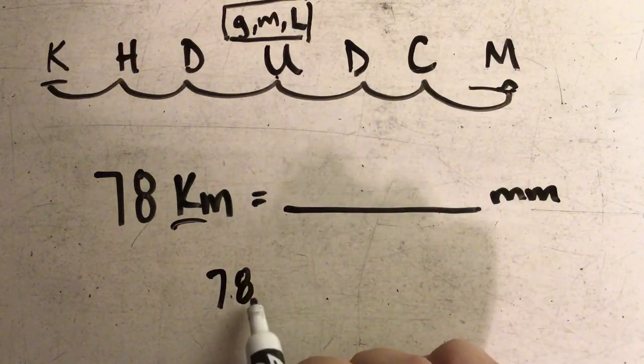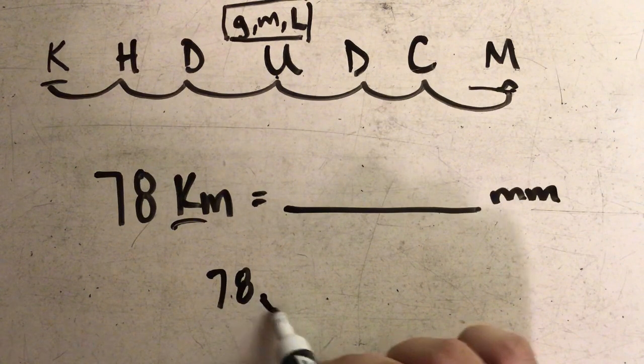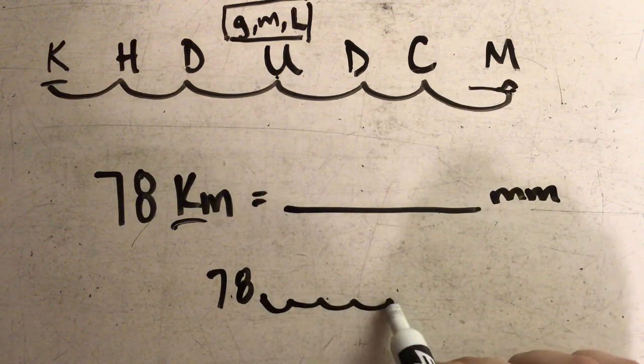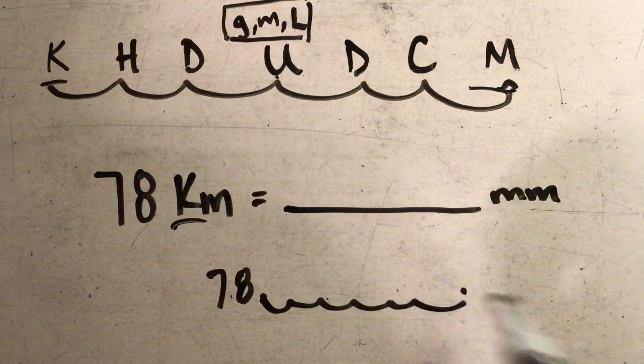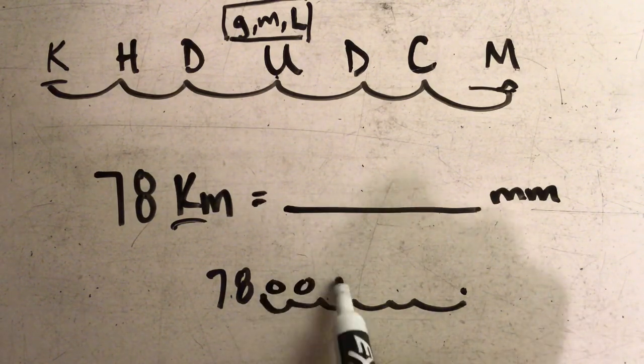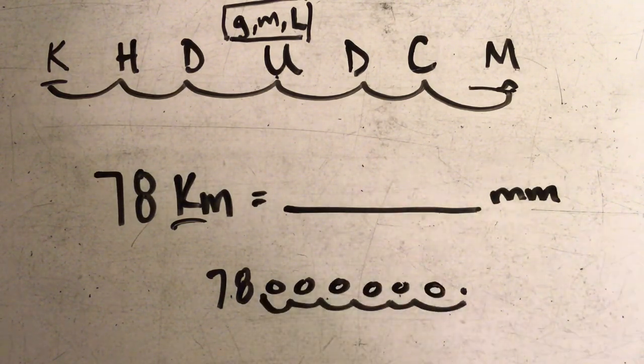Again, I don't have a decimal in this problem, so it's right at the end, and I move it one, two, three, four, five, six places. And I find that I have six zeros that I need to annex in my answer. So my answer ends up being 78 million millimeters.